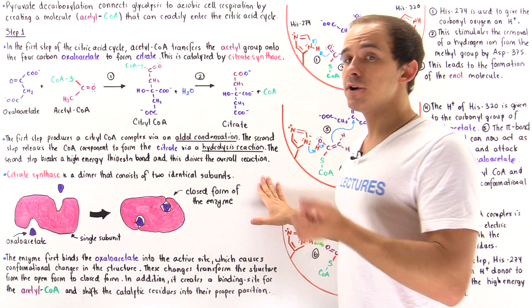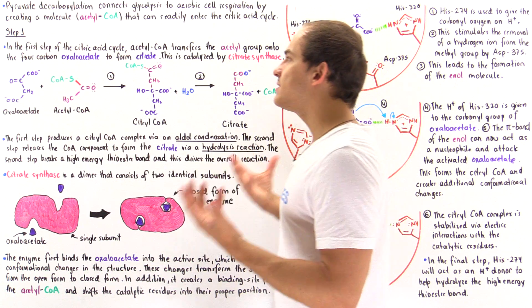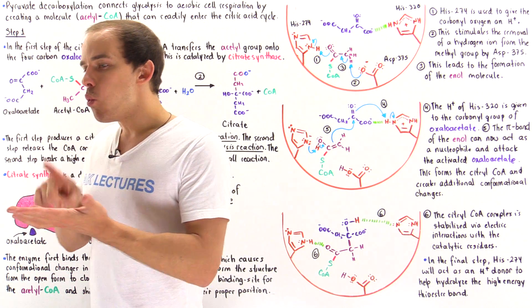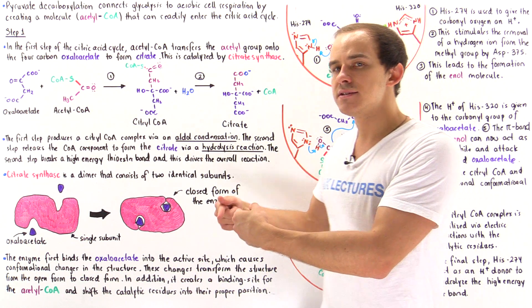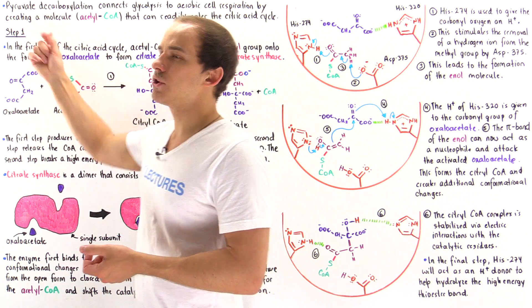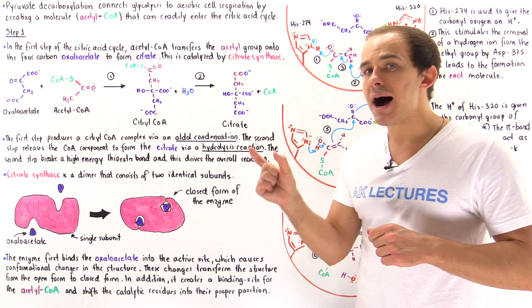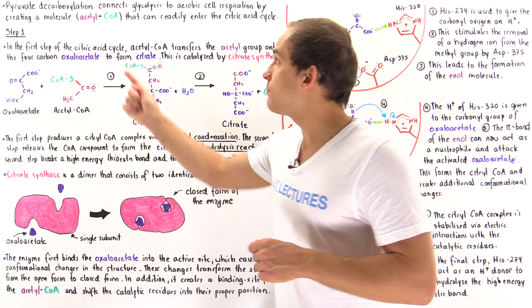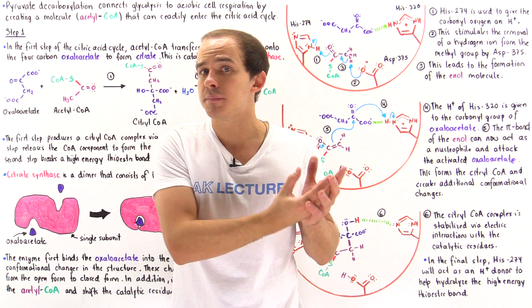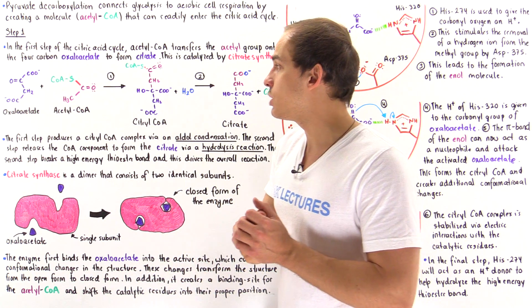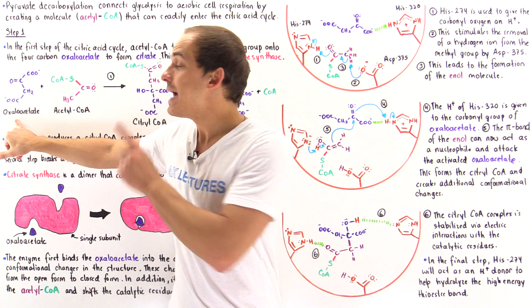In this lecture, we begin our discussion on the first step of the citric acid cycle. Once we form the acetyl coenzyme A complex, it enters the citric acid cycle and undergoes step one. The ultimate goal of step one is to combine the acetyl group of acetyl coenzyme A — the two-carbon component — onto a four-carbon molecule found in the matrix of the mitochondria known as oxaloacetate.